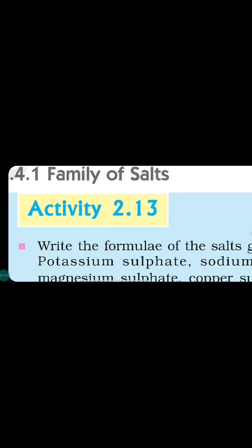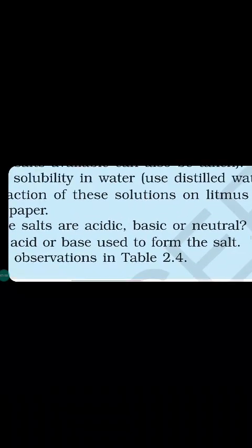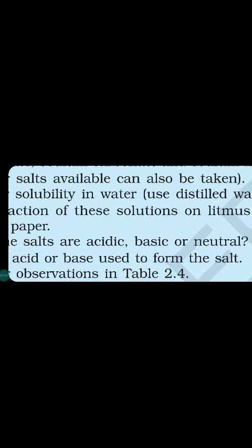First one: acidic salts. Acidic salts are obtained when a strong acid combines with a weak base. The acid selected is strong and the base selected is weak, so the salt formed is acidic in nature.